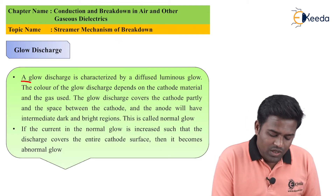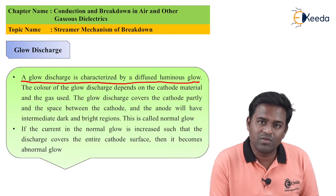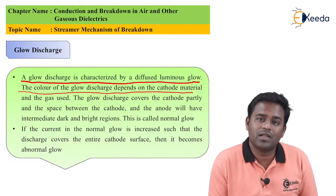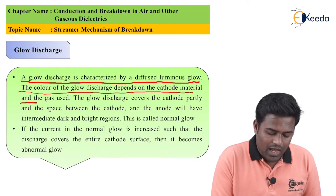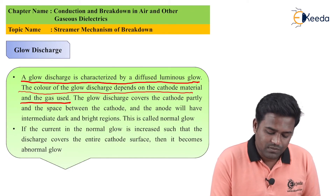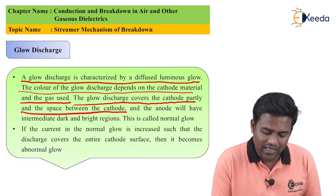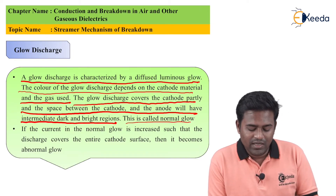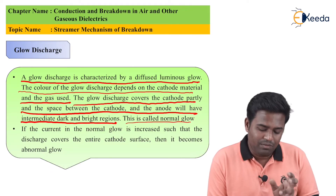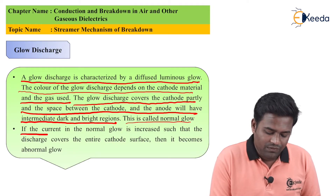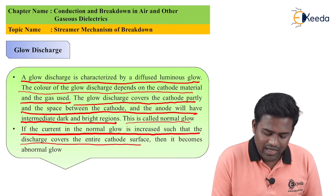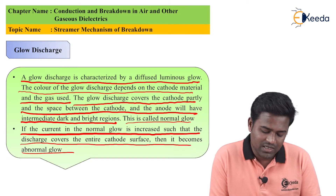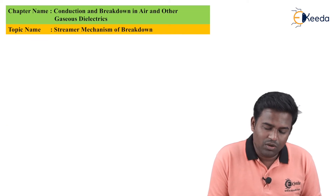What is meant by glow discharge? A glow discharge is characterized by a diffuse luminous glow — similar to the bluish luminous glow in corona losses. The color of glow discharge depends on the cathode material and the type of gas used in the chamber. The glow discharge covers the cathode partly, and the space between cathode and anode will have intermediate dark and bright regions. This is called normal glow. If current in the normal glow is increased such that the discharge covers the entire cathode surface, then it becomes abnormal glow.